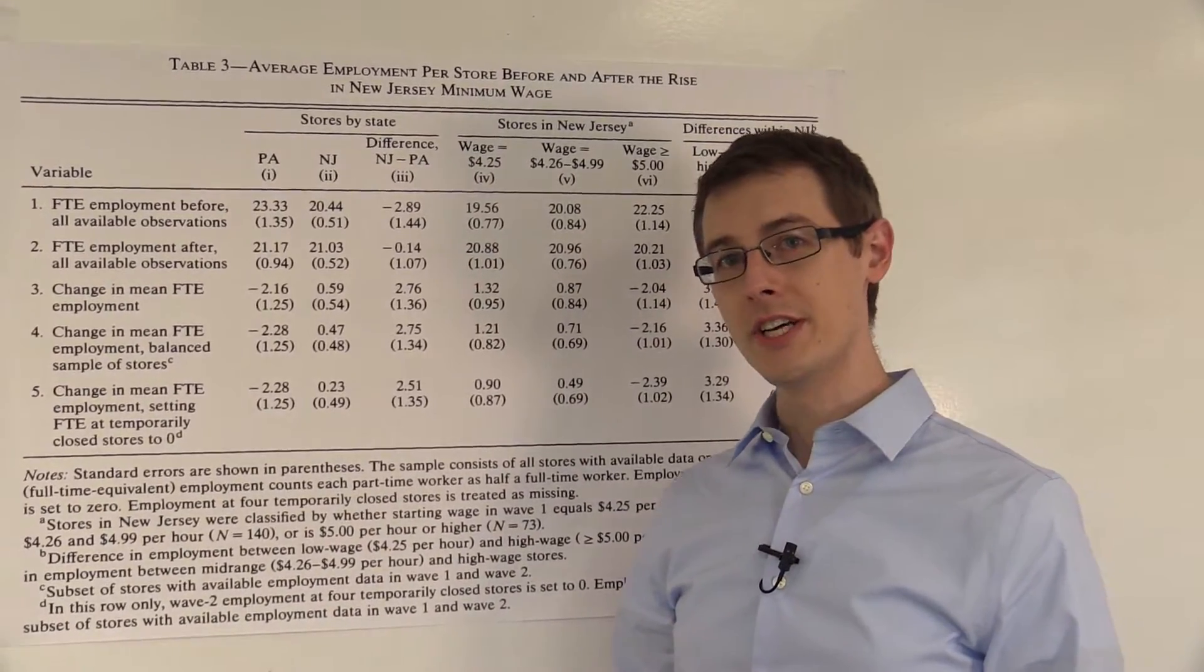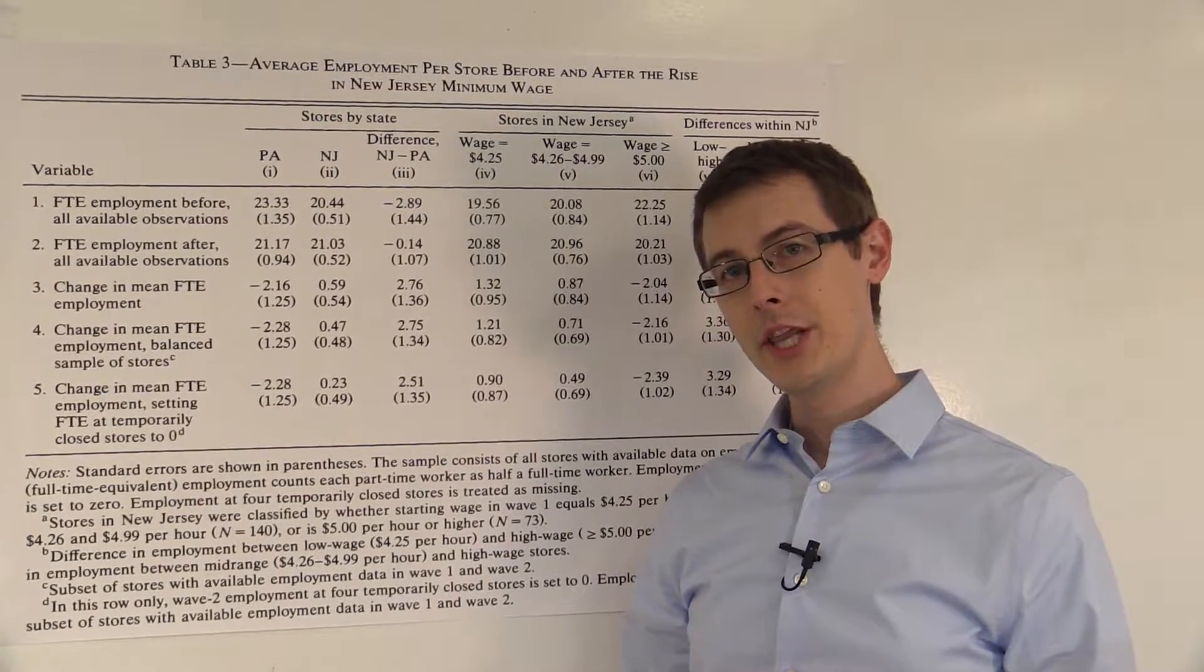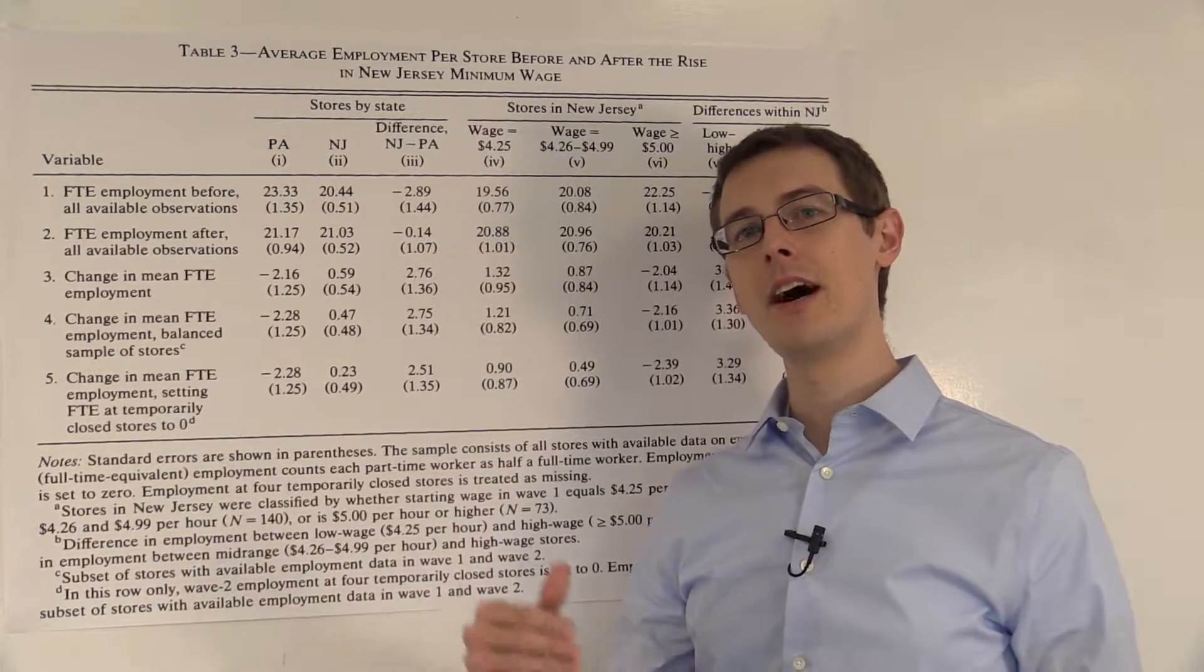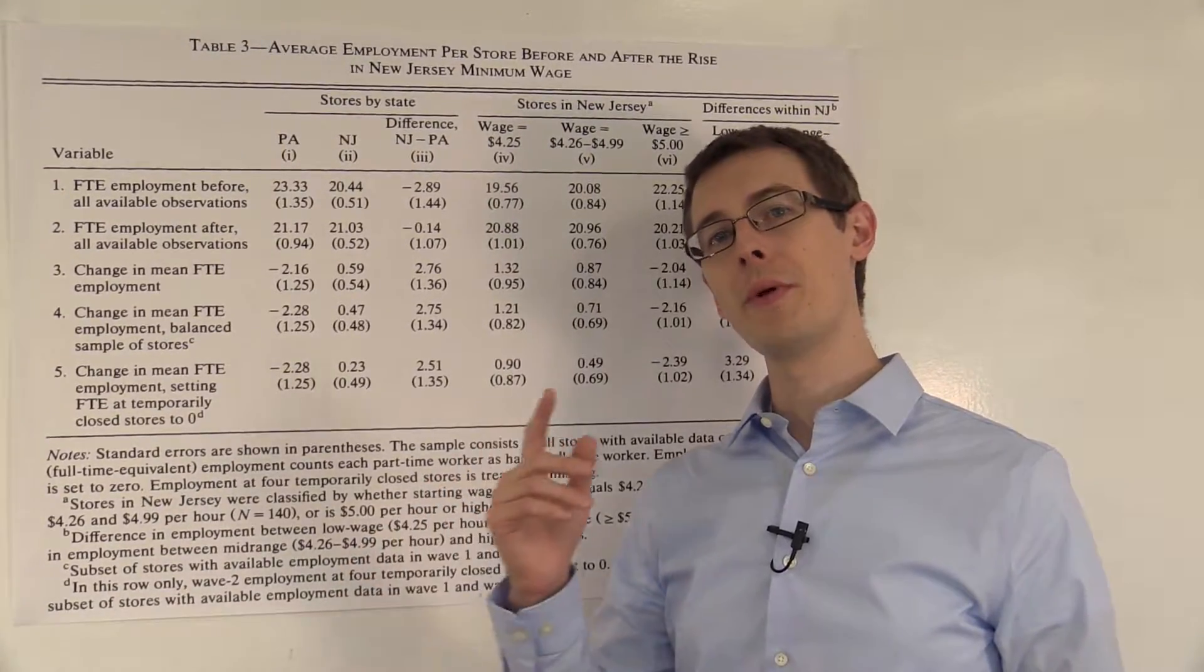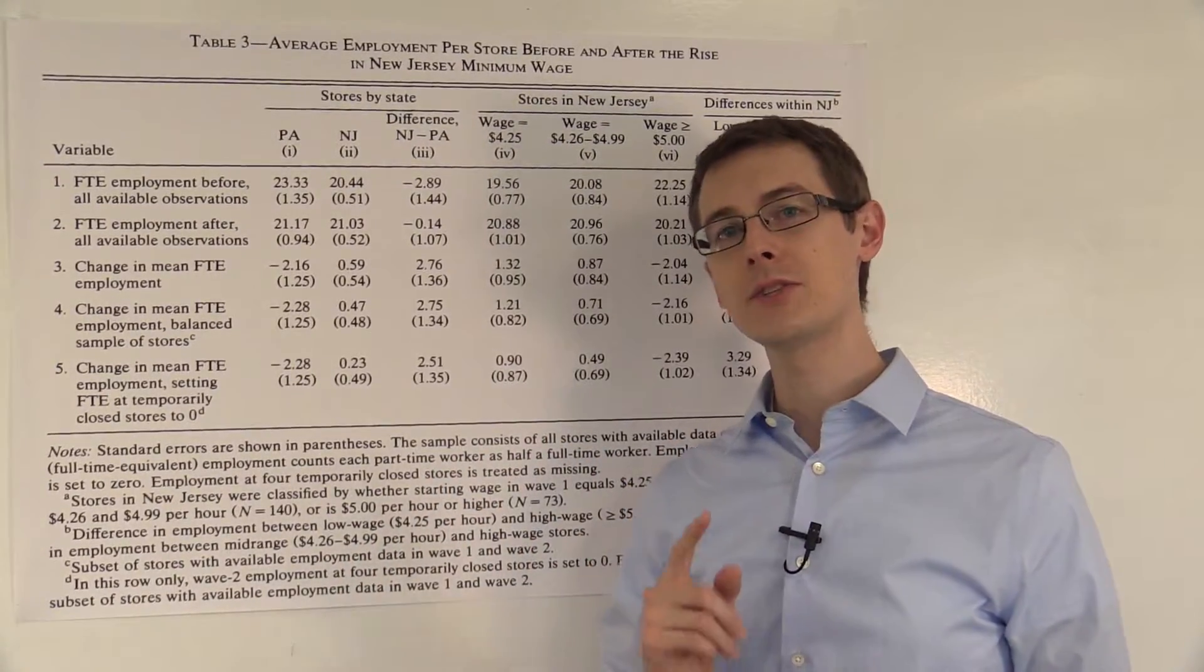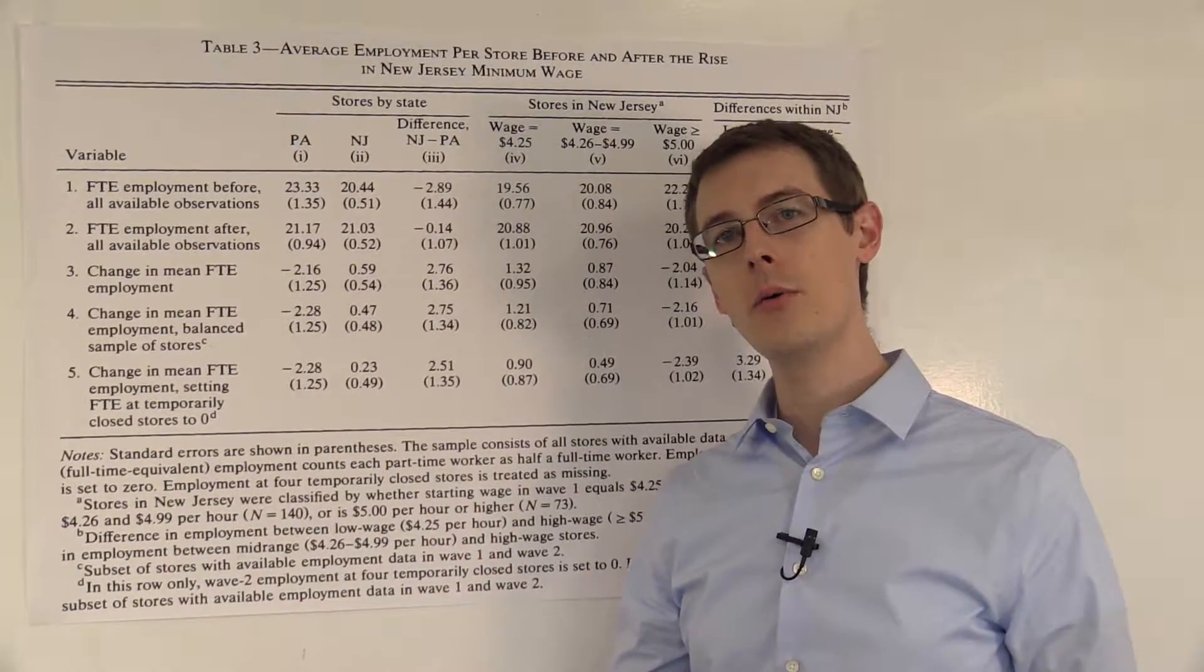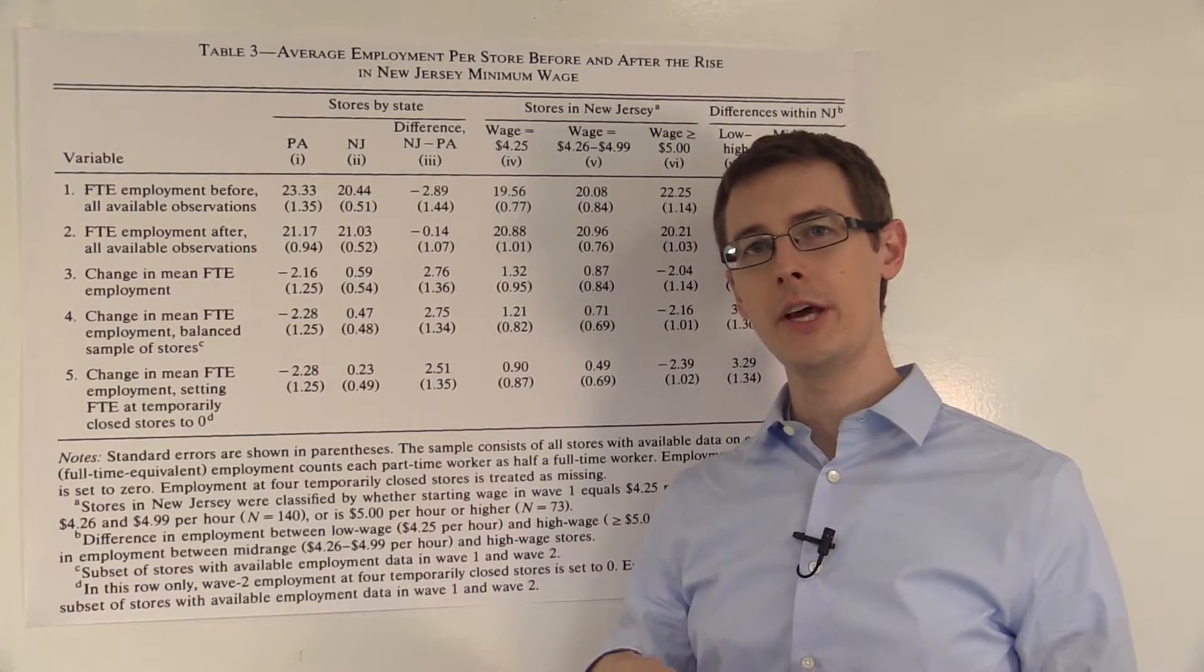In New Jersey in 1992, the minimum wage was increased from $4.25 to $5.05. So what they did is they surveyed fast food restaurants in New Jersey before the minimum wage law was passed and after it was enacted.